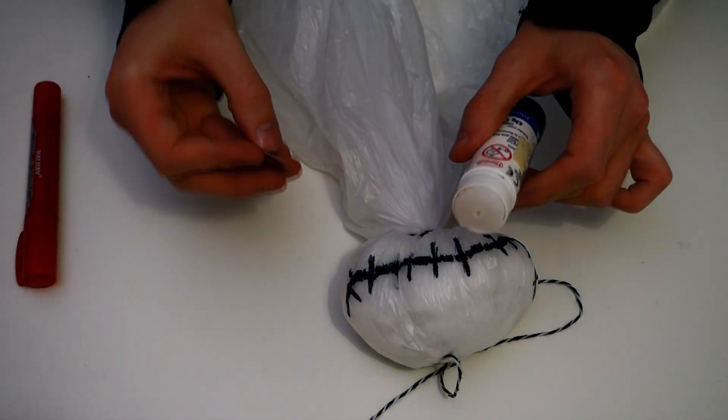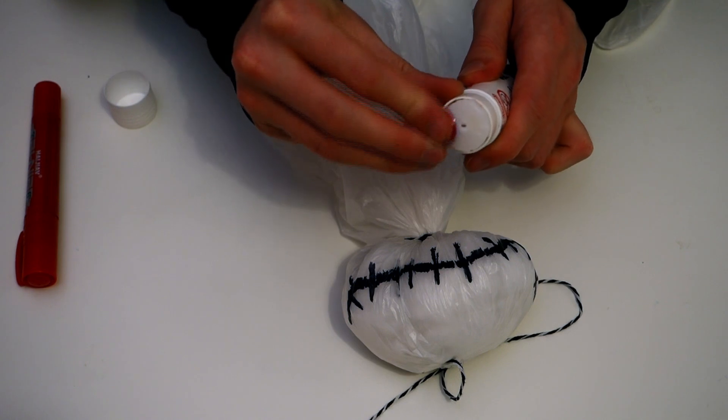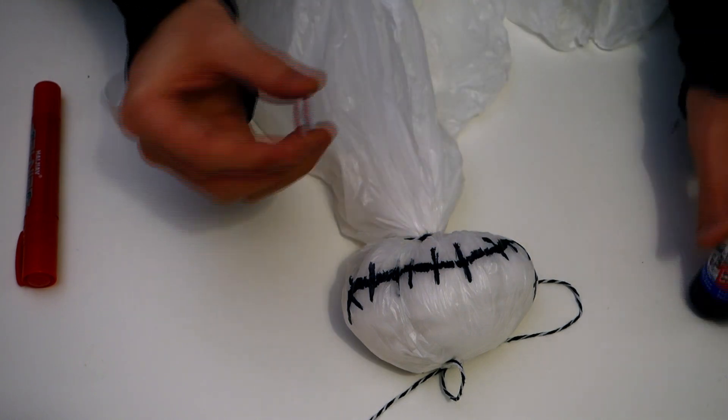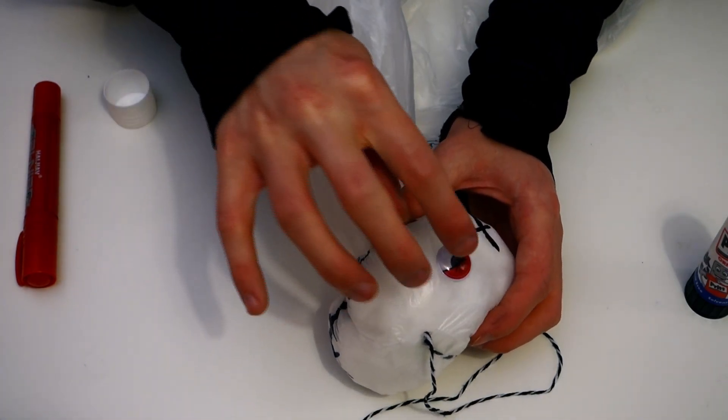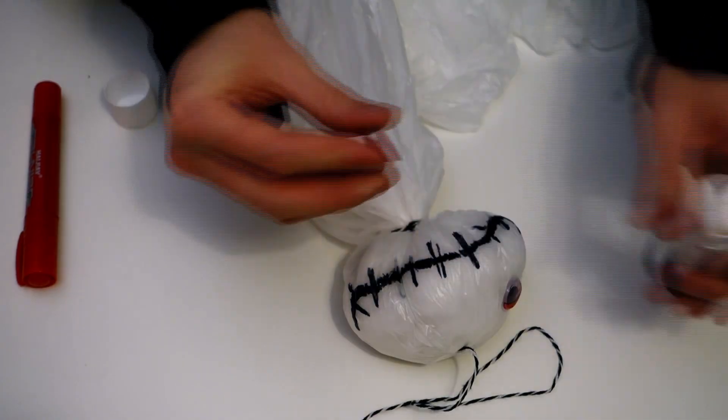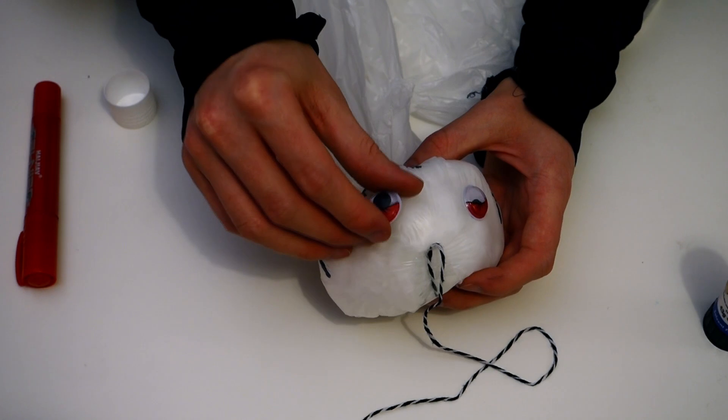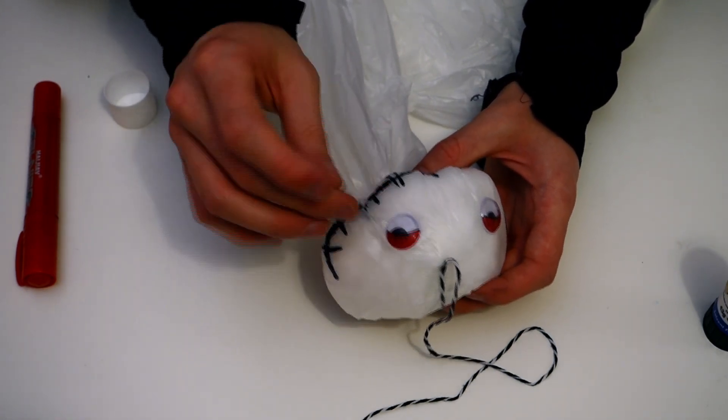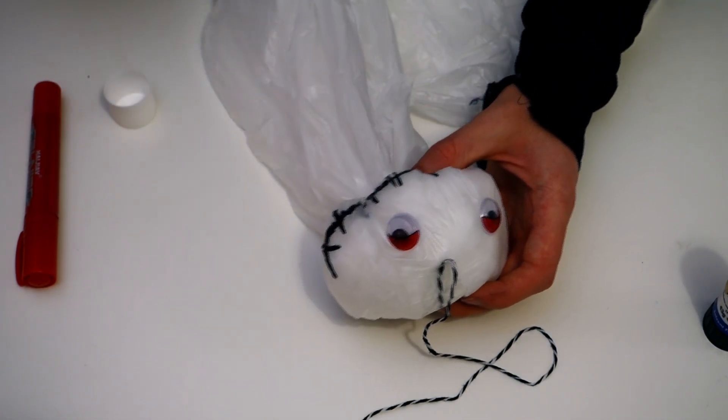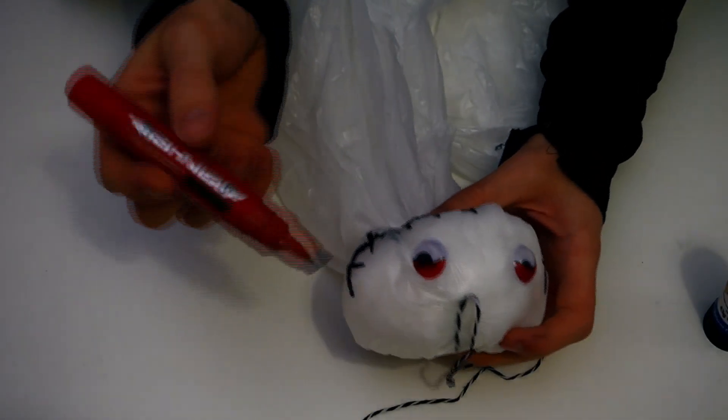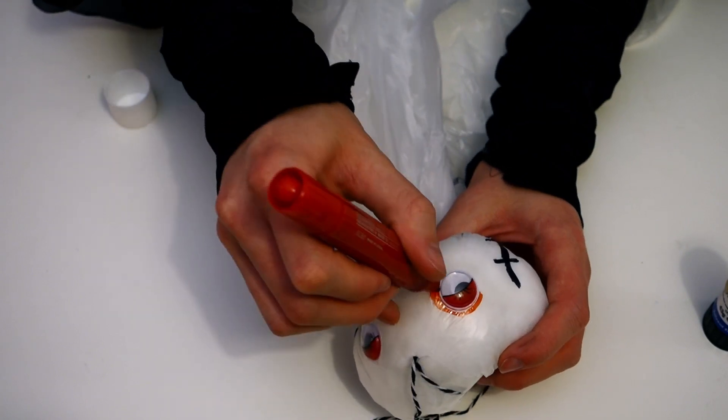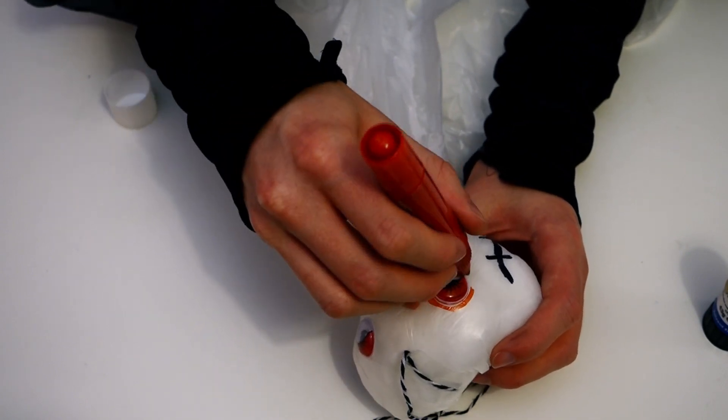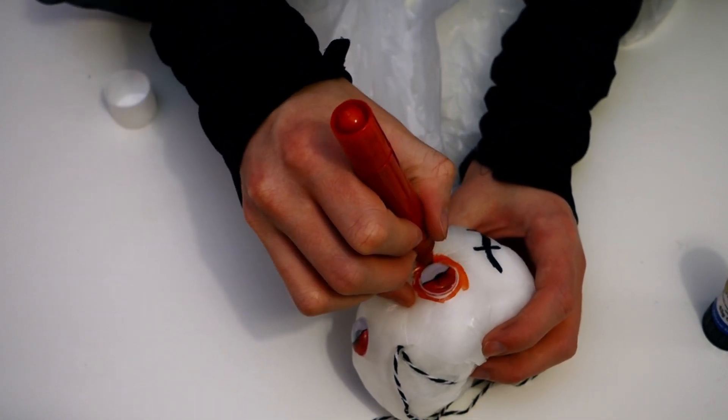So we're going to grab our glue stick and the eye. Stick the eye first. My one's going to go there. Scary. Then we're going to grab our pen and we're just going to go around the edge of the eye. Like that. Very, very scary.